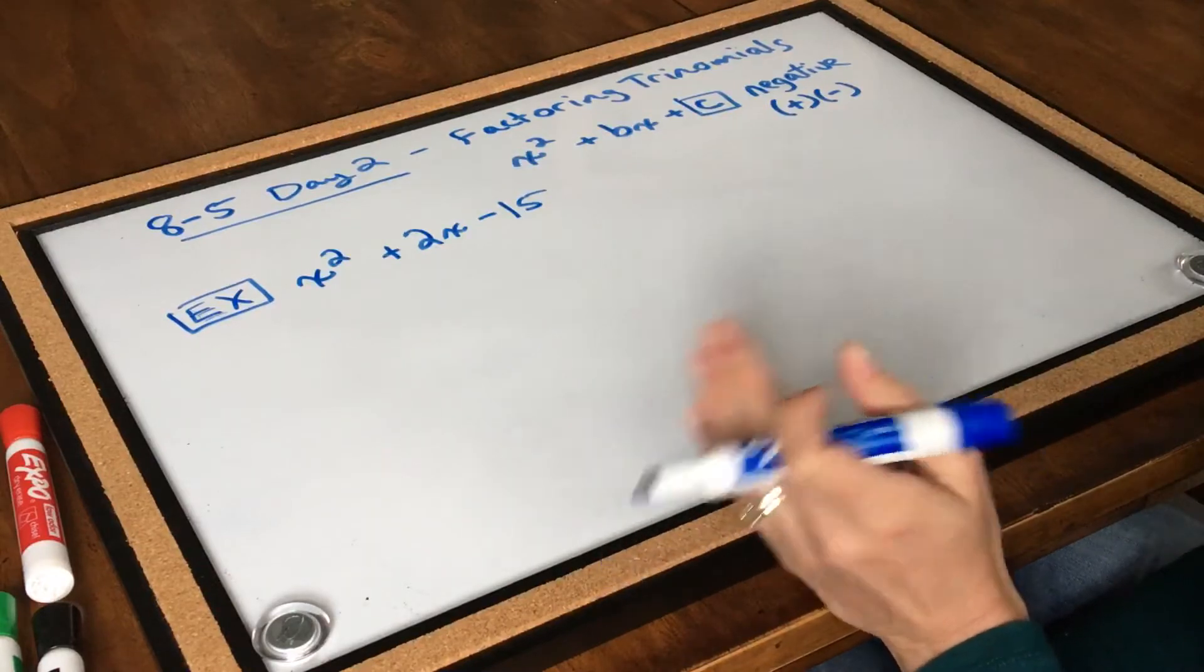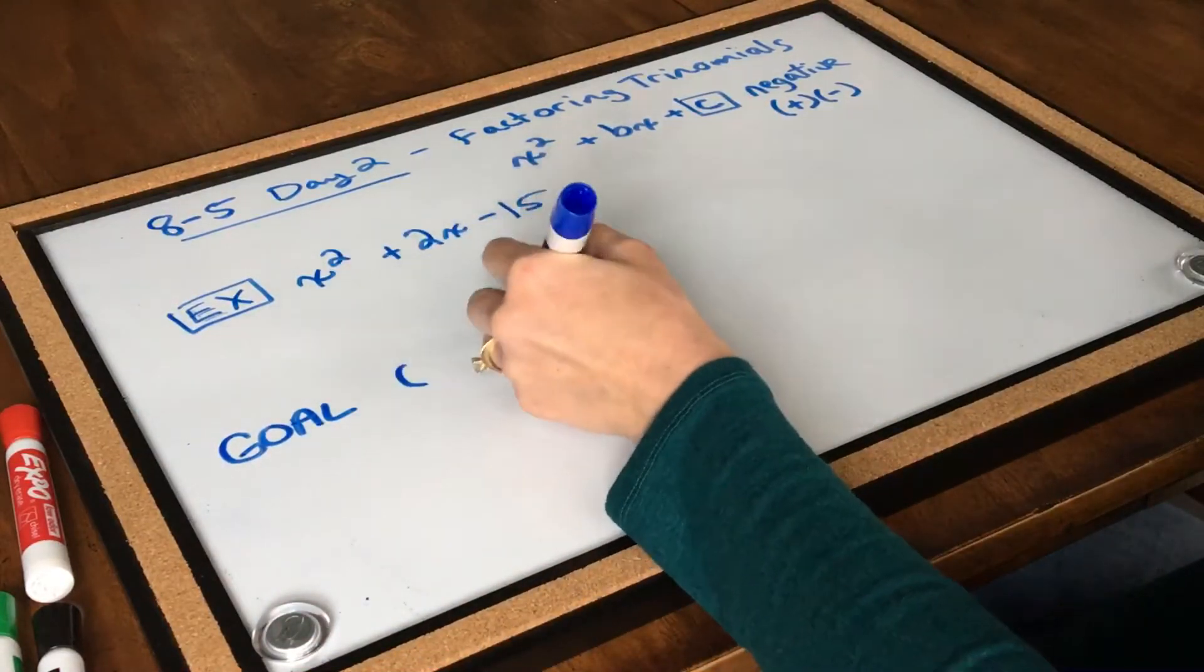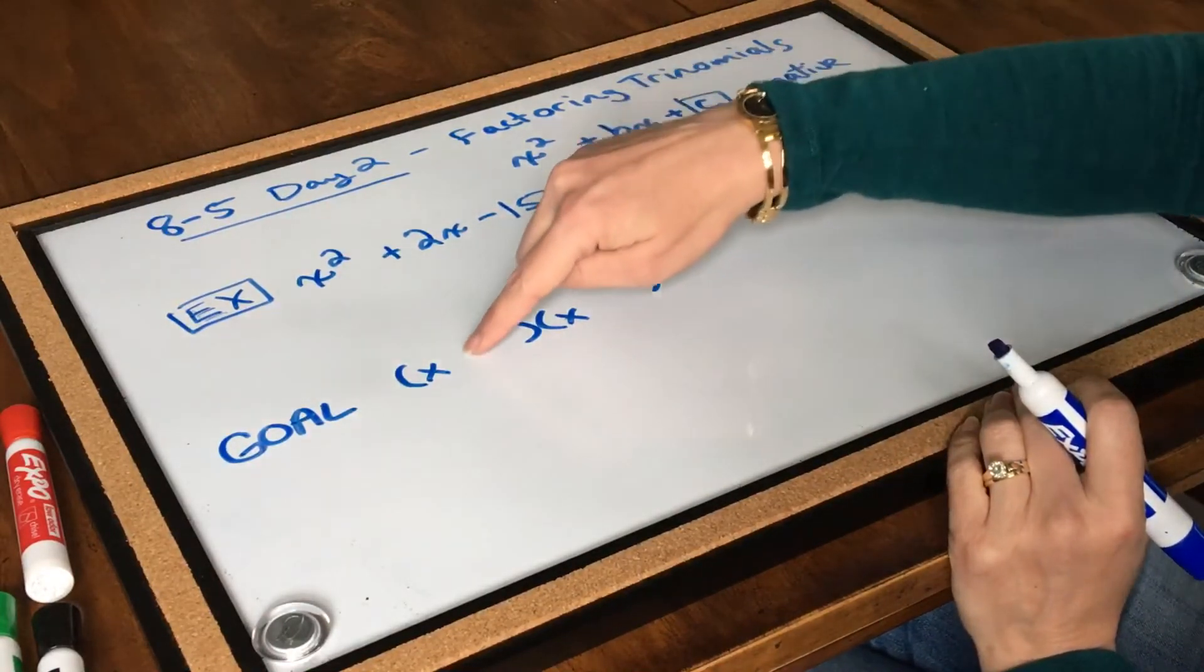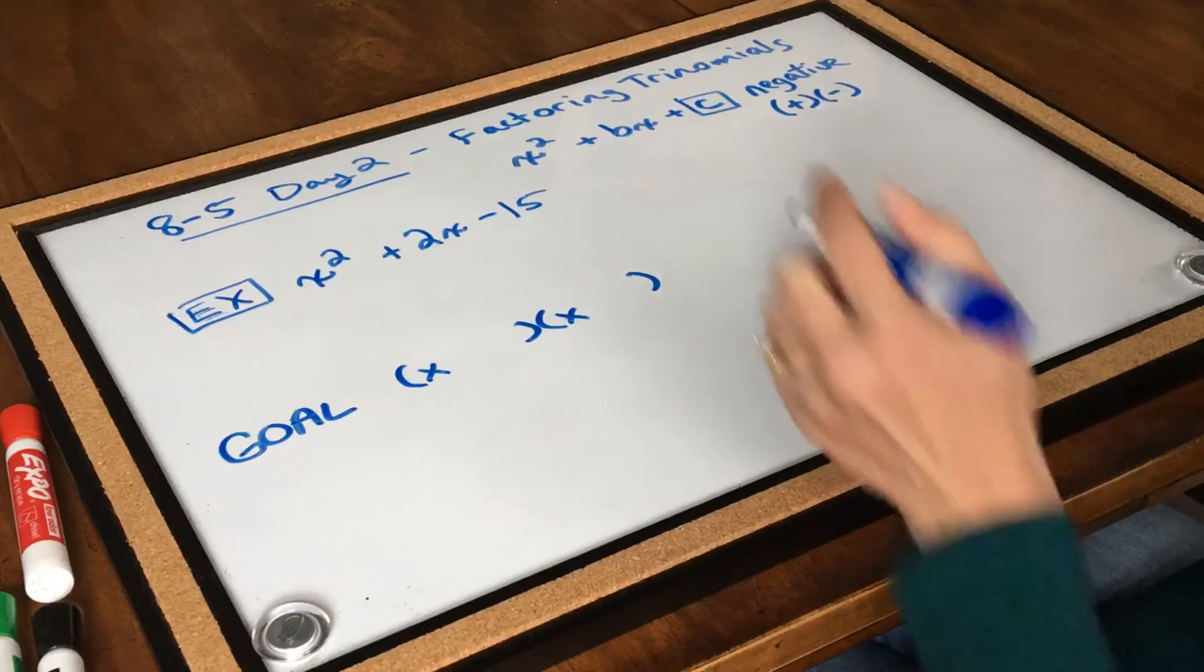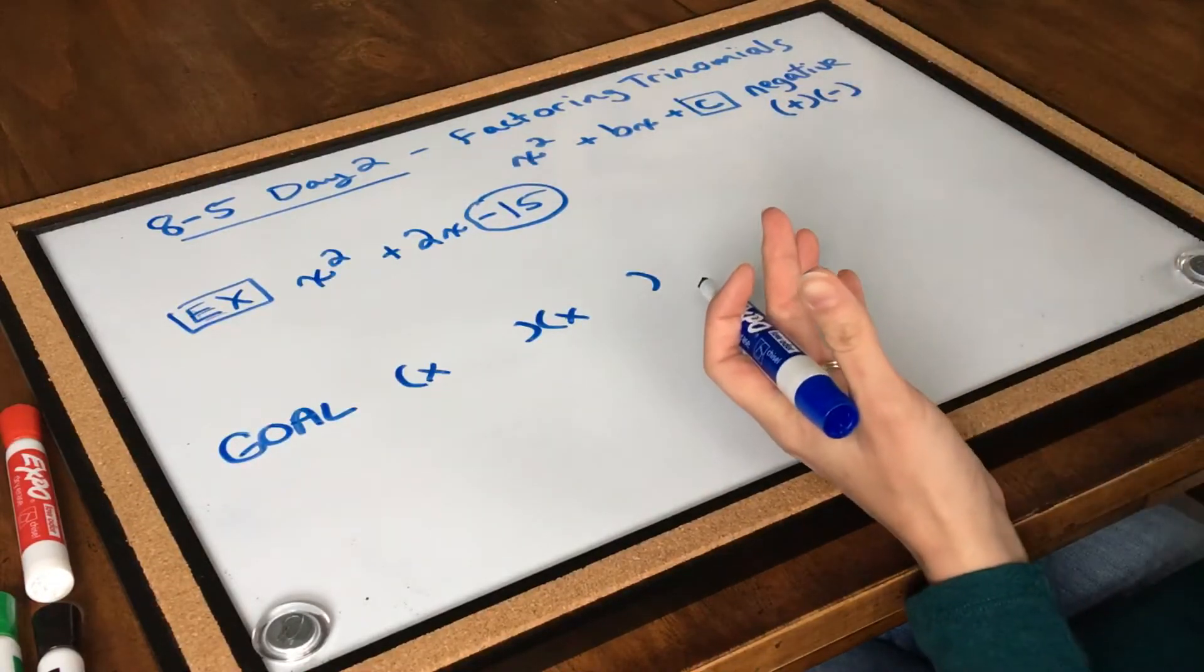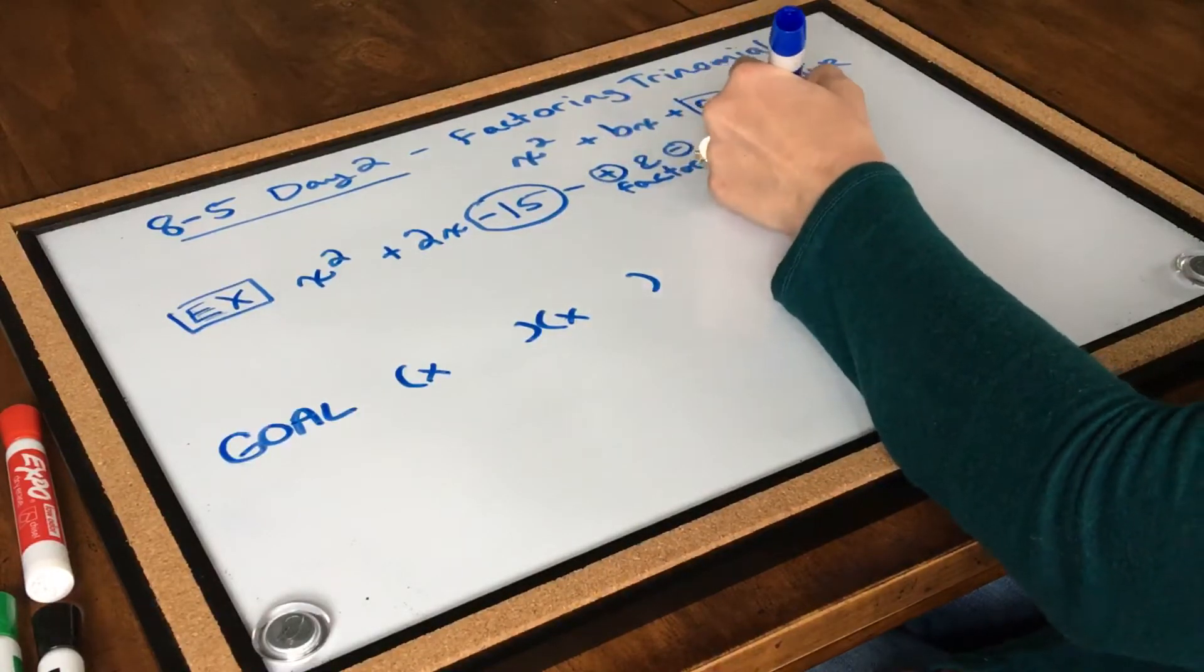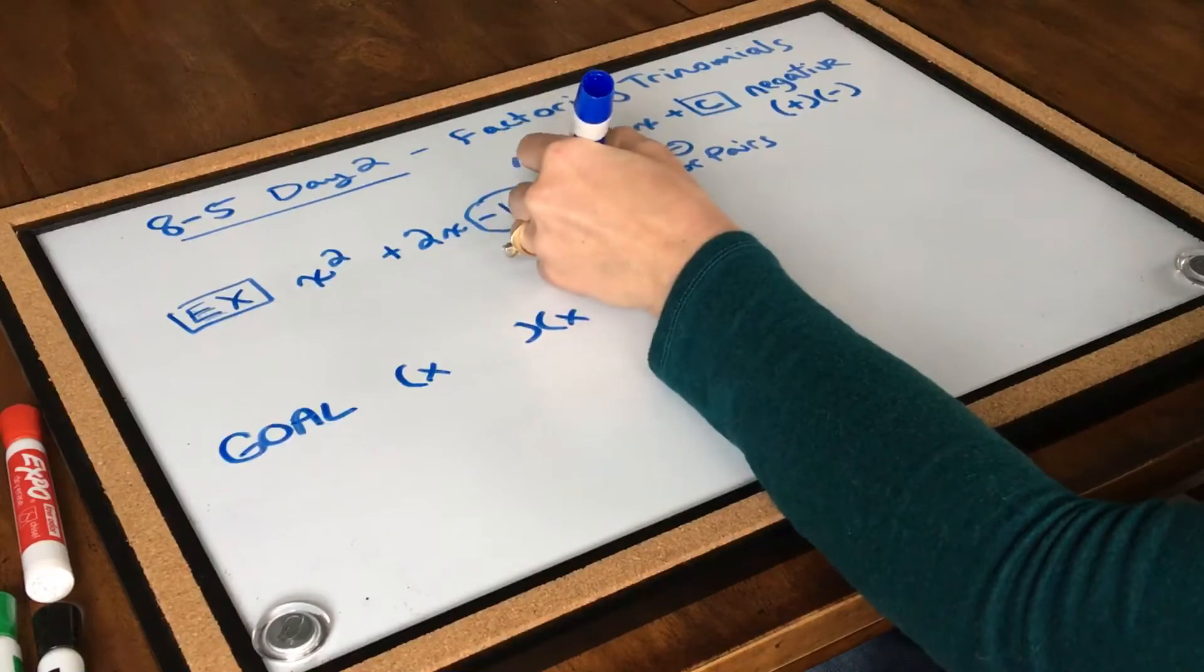So the first thing I'm going to think about is, of course, my goal. Remember, your goal is always two parentheses. And I'm going to put in my variable. So my variable is x. Since my last term is negative, I'm going to expect that one of these is going to be positive and one is going to be negative. When I'm factoring this negative 15, I have to consider both positive and negative factor pairs. Let me show you what I mean.